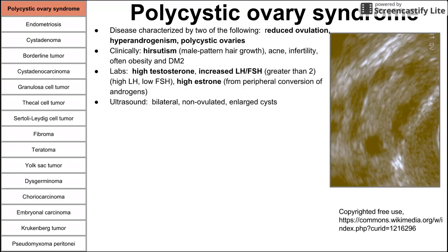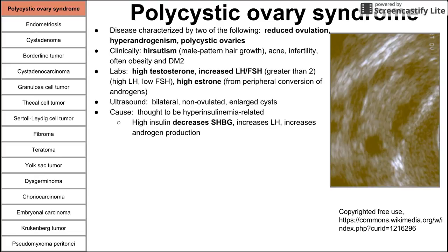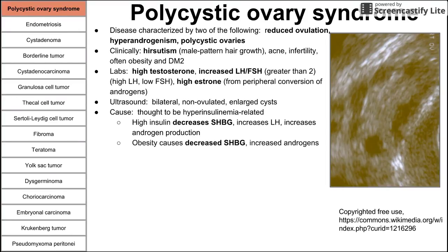On ultrasound, you see bilateral non-ovulated enlarged cysts. The cause is thought to be hyperinsulinemia-related. High insulin decreases SHBG — steroid hormone binding globulin — which is a protein that binds testosterone. With lower SHBG, you have more effective androgen. Obesity also causes decreased SHBG, increasing effective testosterone, leading to symptoms like acne and hirsutism. When diagnosing PCOS, you want to exclude congenital adrenal hyperplasia, hypothyroidism, hyperprolactinemia, and Cushing's disease.